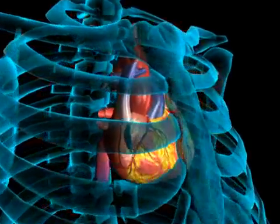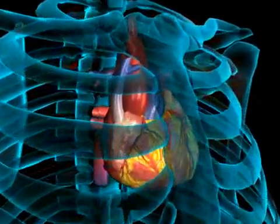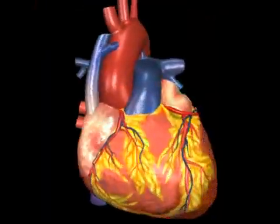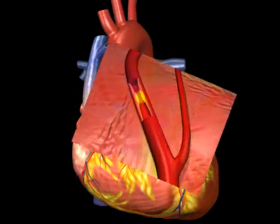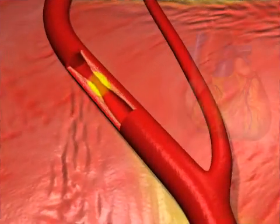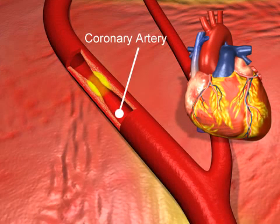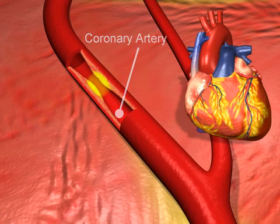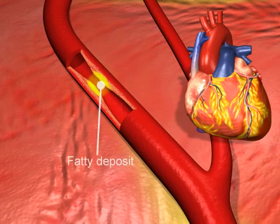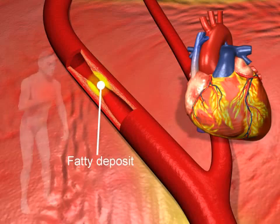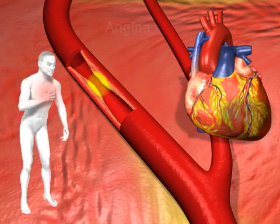Percutaneous Transluminal Coronary Angioplasty, or PTCA, often abbreviated to angioplasty, is a procedure to reopen a narrowed coronary artery. The heart muscle is supplied with oxygen by blood arriving through the coronary arteries. If these arteries are narrowed by fatty deposits, the heart becomes starved of oxygen, which causes pain in the chest called angina.